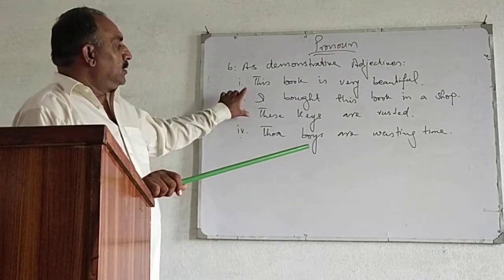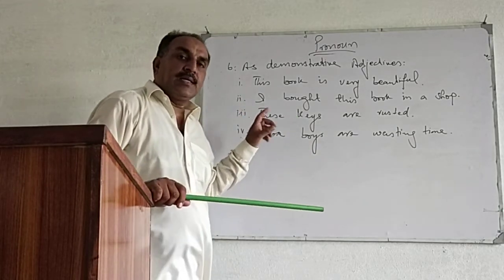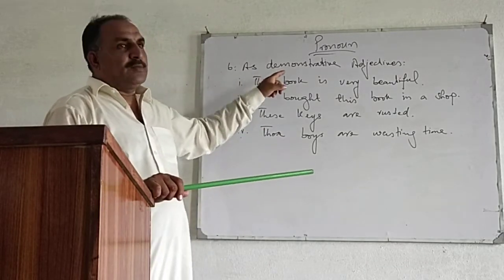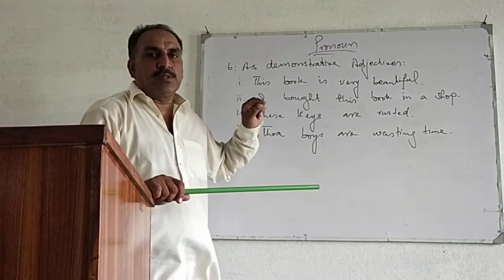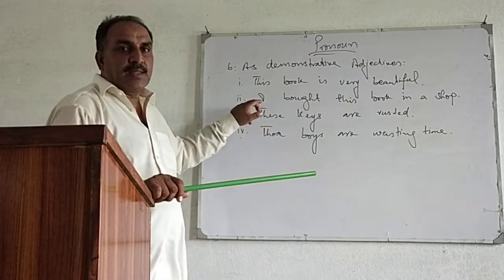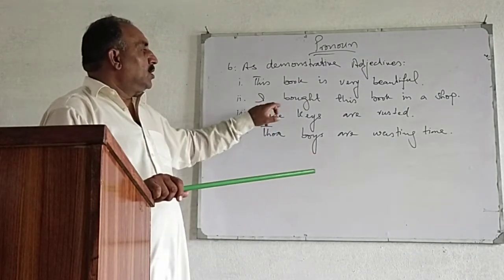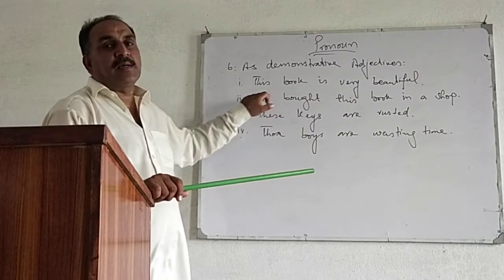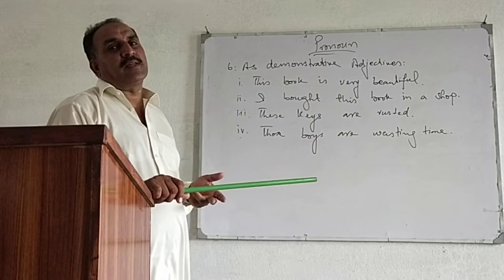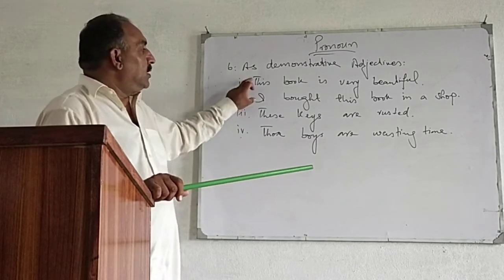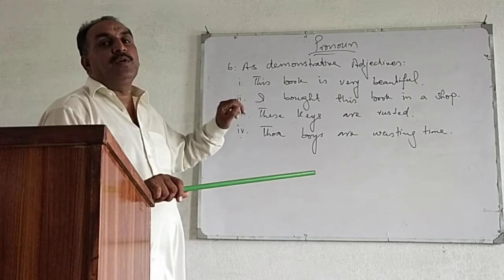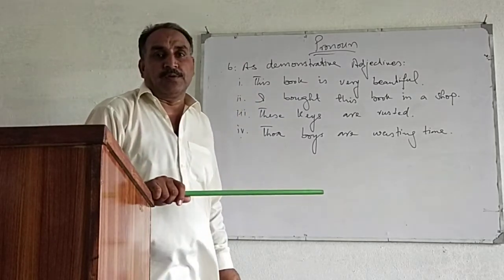Now you can understand the difference. When we were discussing them as demonstrative pronouns, after this, that, these, and those, we didn't have any noun subject — so they were used as subjects themselves. Here, we have nouns as subjects, and before the subject we use the demonstrative words.